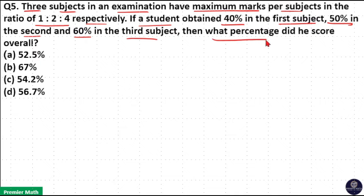Here, maximum marks for these three subjects are in the ratio 1:2:4. That means total maximum marks is 4 plus 2 plus 1, which is 7 marks.